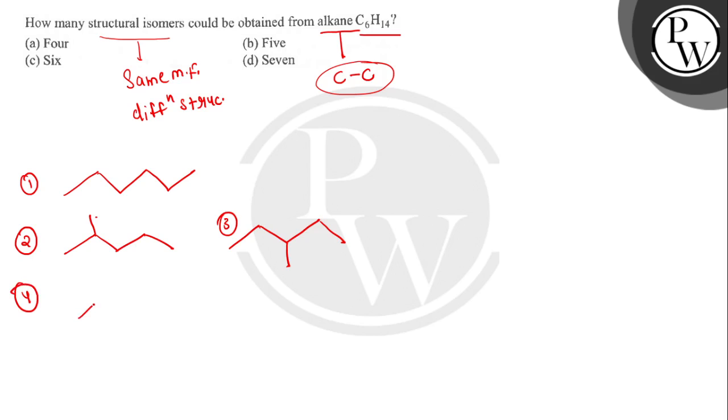Now we have two methyl groups. These two methyl groups can be attached at the second position, and the next isomer will be when these methyl groups are present at the second and third positions.